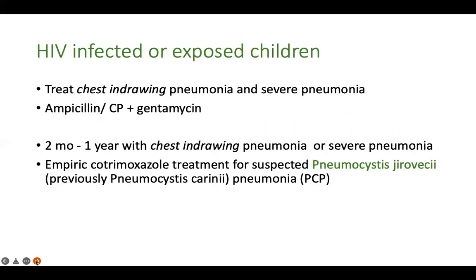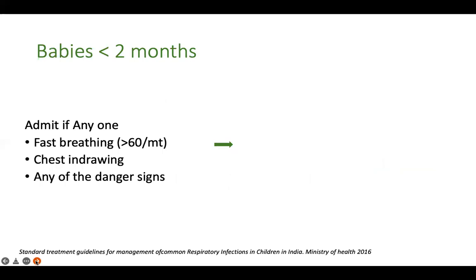There is a subgroup of patients in whom treatment is slightly different: HIV-infected or HIV-exposed children. Even if they have chest indrawing pneumonia without danger signs, they need to be admitted and given parenteral antibiotics - ampicillin or crystalline penicillin with gentamicin - because pneumonia can be severe in this group. Additionally, in HIV-infected children between two months to one year of age, empirical co-trimoxazole must be offered for treatment of suspected Pneumocystis jirovecii pneumonia.